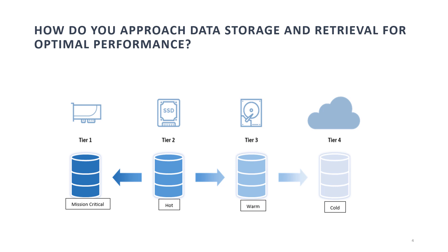A sample answer: I optimized our database by implementing a tiered storage solution, which involves categorizing data based on access frequency and using appropriate storage mediums. We used indexing and query optimization techniques to speed up data retrieval, which improved overall system performance by 30%.